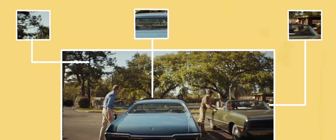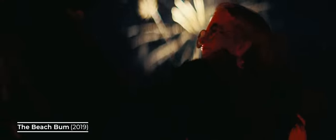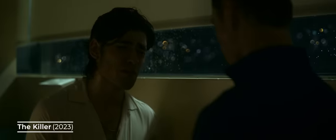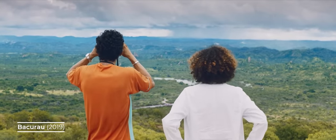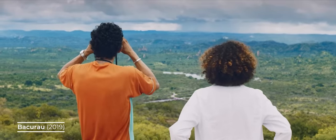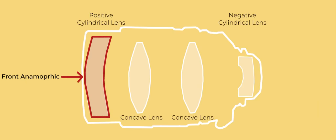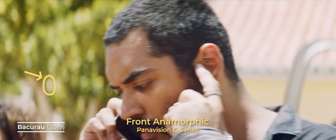Another difference between spherical and anamorphic lenses is how their bokeh is rendered — the out-of-focus area in an image. Because the glass elements in 1x spherical lenses are rounded, they produce rounded balls of bokeh. However, anamorphic lenses with their cylindrical elements create bokeh which takes on more of an oval shape. This shape is also affected by where the cylindrical glass element is placed within the lens. Most true anamorphic lenses place the cylindrical element at the front of the lens, with regular circular elements behind it — these are called front anamorphics and produce that classic ovular distortion in the background.